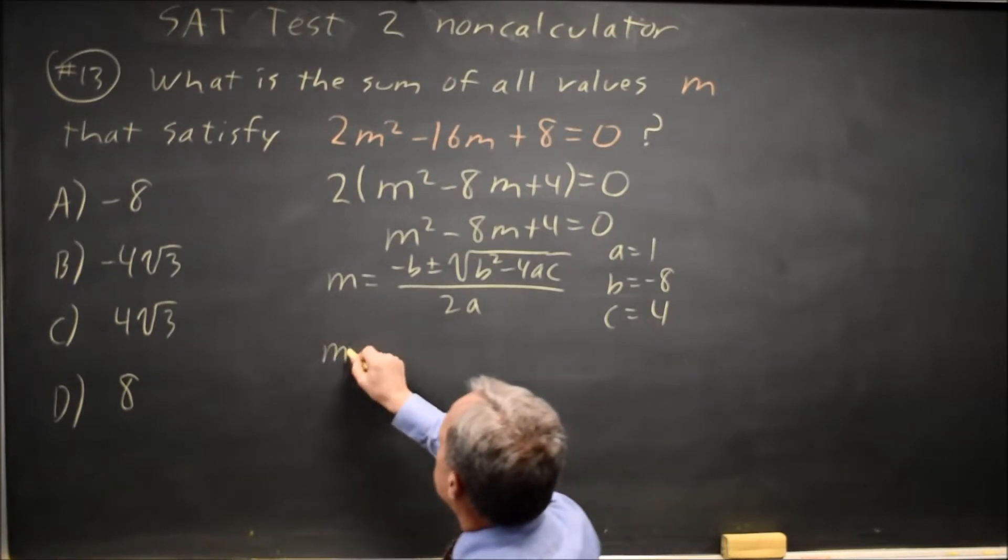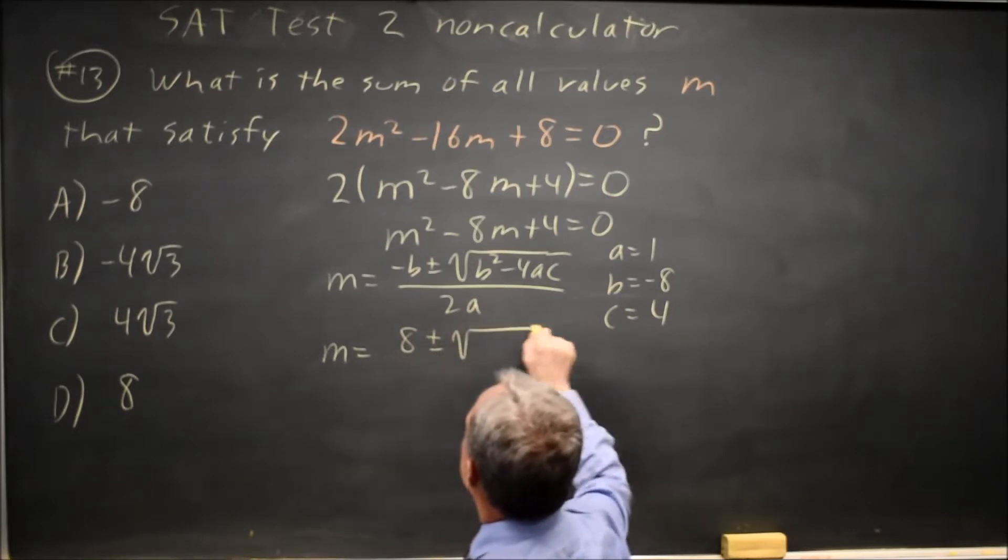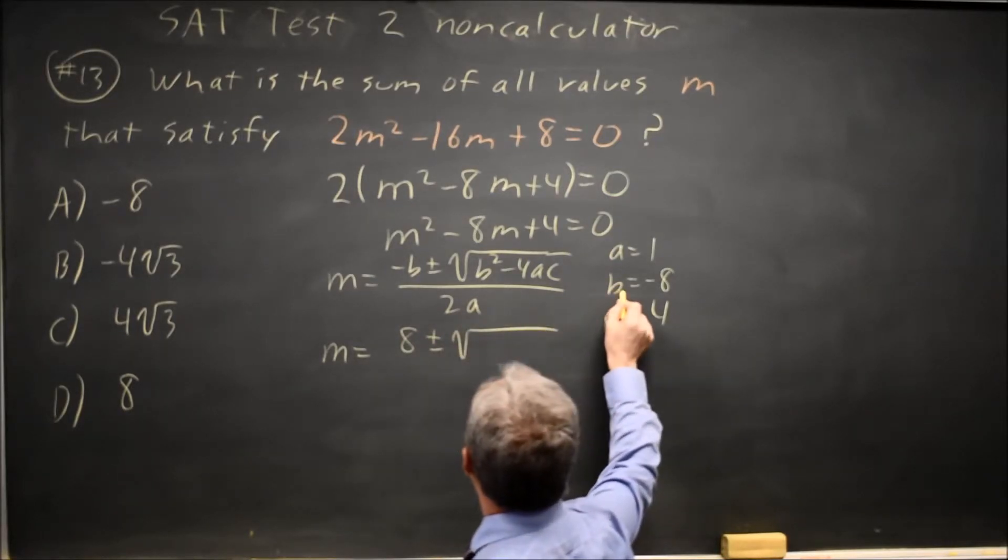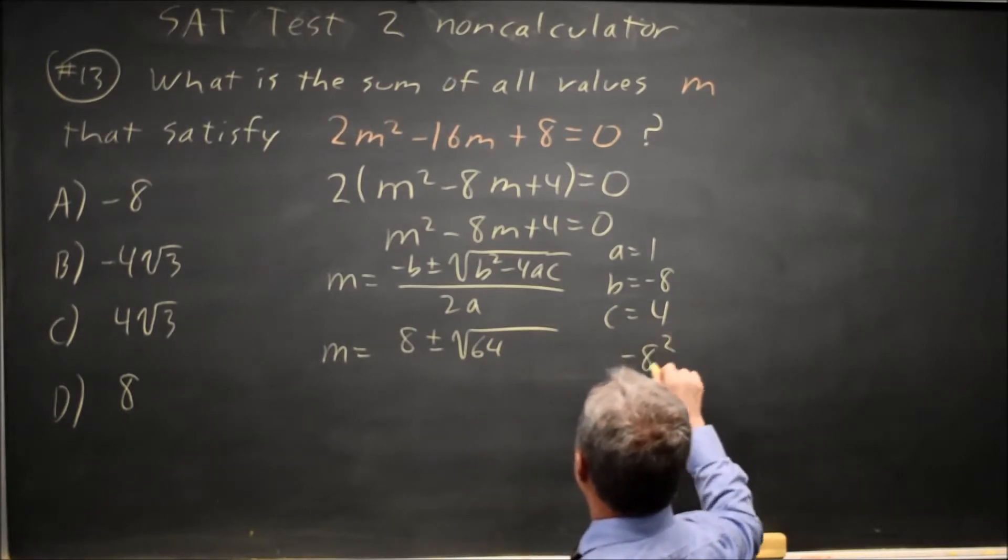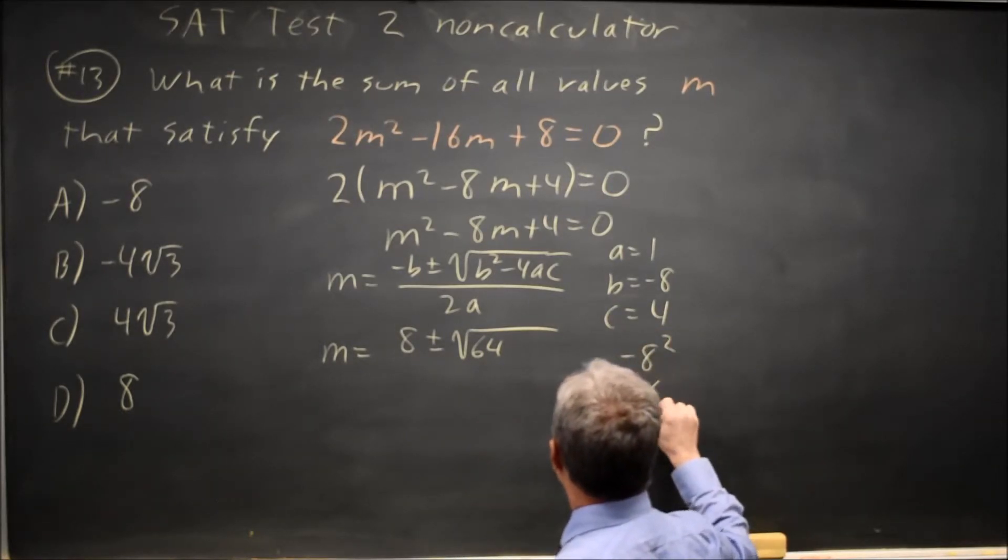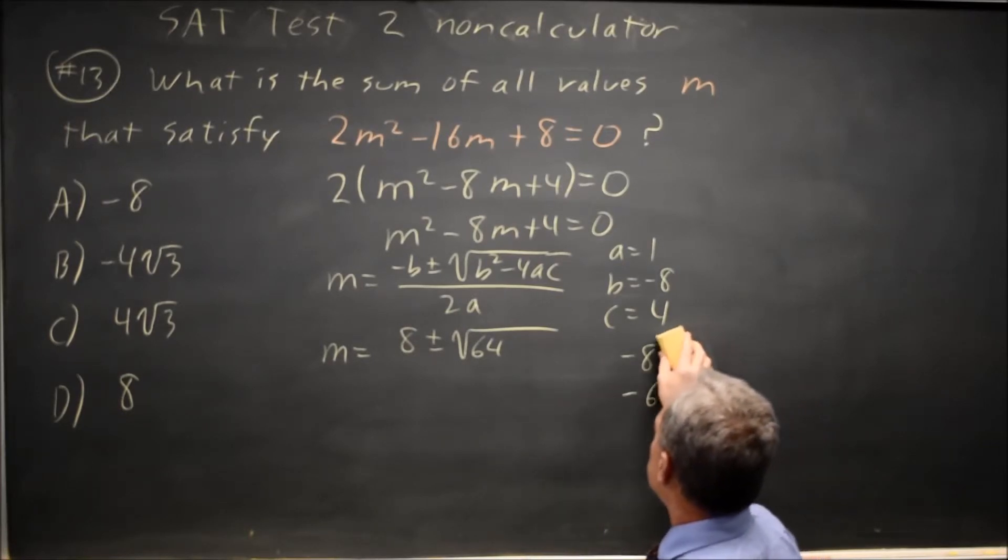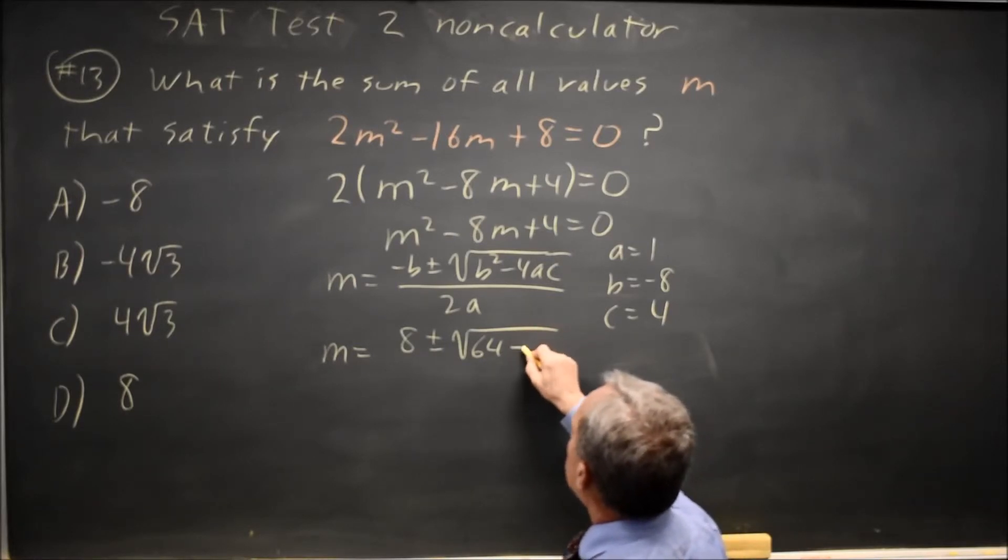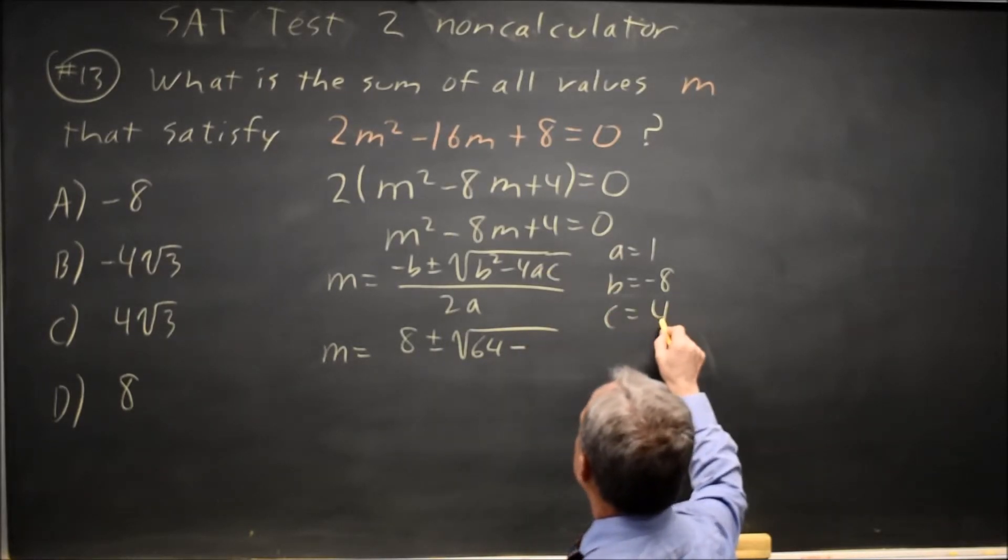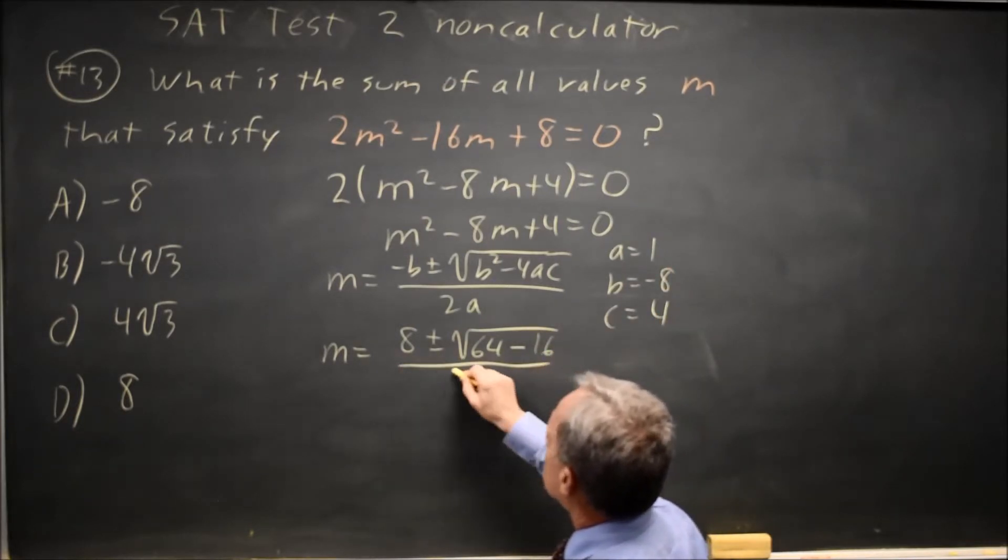So my m values are negative b, which is minus negative 8, is positive 8, plus or minus square root b squared is negative 8 squared is positive 64. If I wrote negative 8 squared, I might inadvertently call that negative 64, which would be the wrong answer, so I prefer to square my negative and write it as the final square. Minus 4ac is minus 4, times 4 is minus 16, times 1 is still minus 16, all over 2.